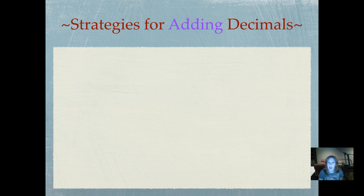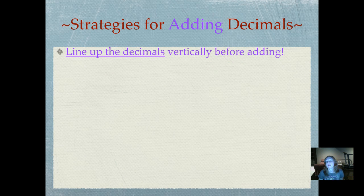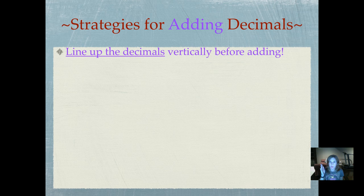Here are our strategies again for adding decimals. You don't need to write all of these down, but if there are some that really might help you, you can write those down. Line up your decimals vertically before adding. That means your decimal numbers should have one decimal right above the other one, always in addition and subtraction.